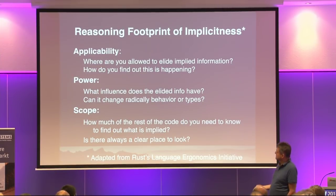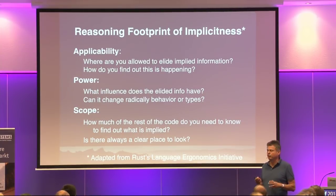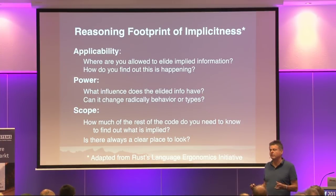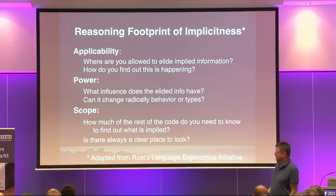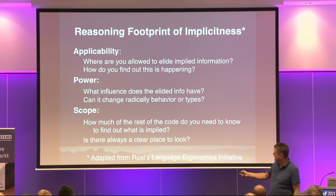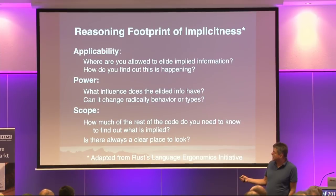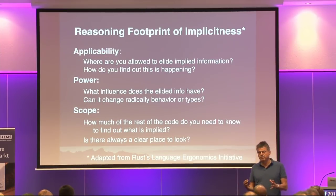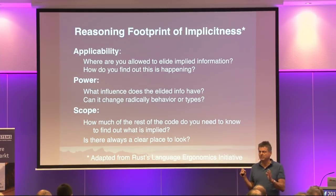If you look at implicit conversions, we have a problem with applicability because we typically don't see that an implicit conversion is implied — the two types don't match up but the types could be inferred and you might not see what is happening. The power is probably okay as long as the implicit conversion is well-behaved — that means it's functional and doesn't do crazy stuff like side effects. And the scope is again very, very large because you need to find out from the whole program where this implicit conversion could have gotten there. That's why implicit conversions are actually very problematic. Implicit parameters are somewhat better because they are less maxed out in applicability — when calling a function with an implicit parameter and not giving anything, that's a clear indication the compiler must have filled in something.